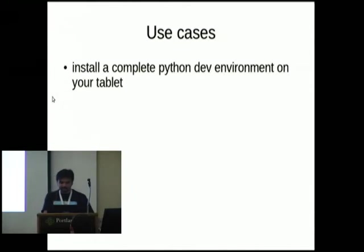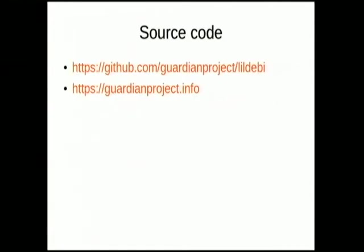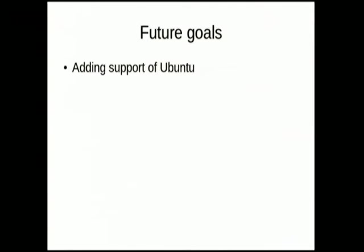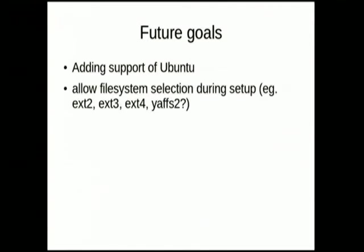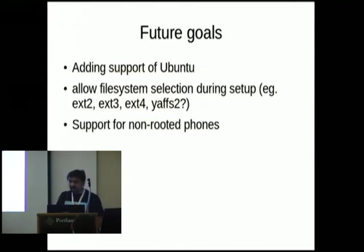Use cases: you can install a Python development environment directly on your tablet without carrying a laptop. You can even run a WordPress server on an older phone. The source code is available on GitHub at github.com/guardianproject/littledebian. The project was started by the Guardian Project. Future scope includes running Ubuntu, supporting different filesystems (ext2/3/4 or yaffs2), and adding support for non-rooted phones - currently only rooted phones are supported.